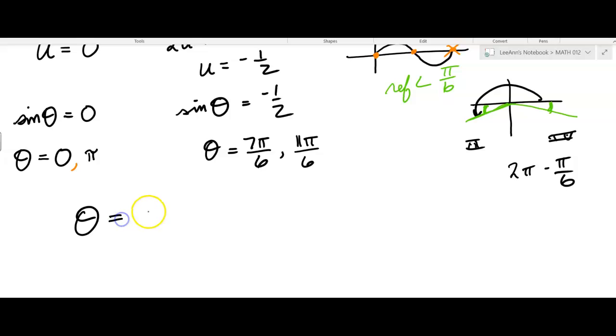So theta equals zero, pi, seven pi over six, and eleven pi over six, and those are all in the domain zero to two pi.